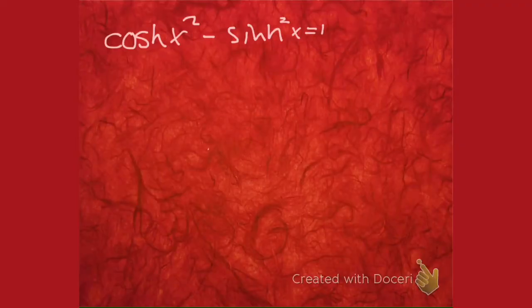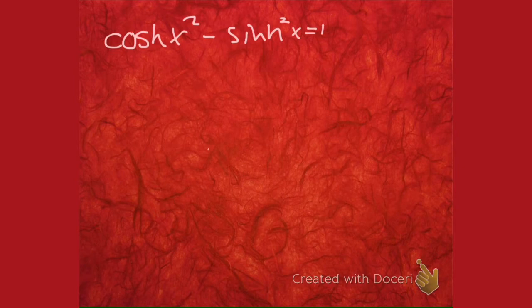Bam! Let's see if we can prove this guy. Prove that the hyperbolic cosine squared minus the hyperbolic sine squared is equal to 1.